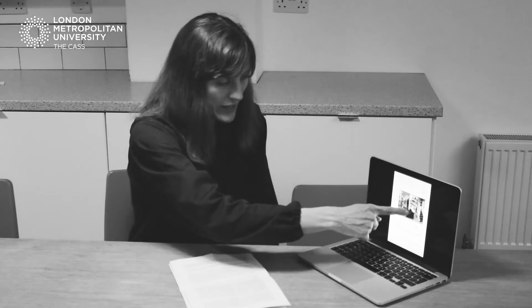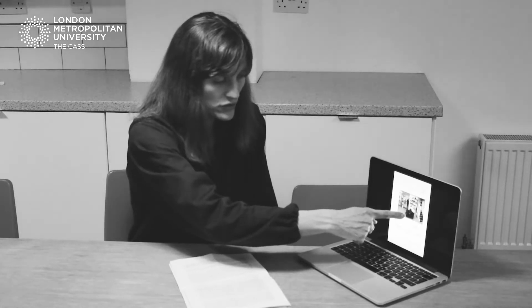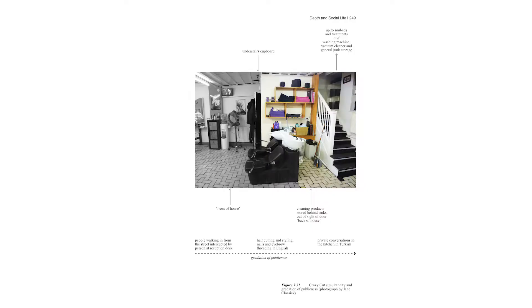Clients would never go behind the sinks unless going upstairs to the waxing room — the furthest back they go is the chairs where they get their hair washed. In this photograph the most private part of the public area of the salon is coloured, and the front-of-house area is black and white. These slides, with the gradation of publicness marked with a dotted line going from front to back, are all pages from my PhD.